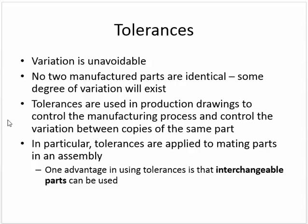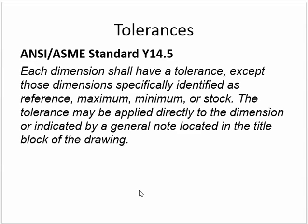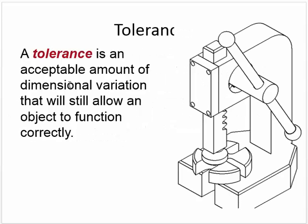One advantage of using tolerances is that interchangeable parts can be used. ANSI ASME standard Y14.5 — ANSI is the one that dictates dimensioning standards. Each dimension shall have a tolerance, except those dimensions specifically identified as reference, maximum, minimum, or stock. The tolerance may be applied directly to the dimension or indicated by a general note located in the title block of the drawing. If you want to be following ANSI standards, you have to do this.